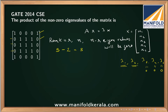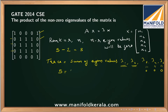Now I need to find λ1 and λ2, the two non-zero eigenvalues. Applying the principle that the trace of the matrix equals the sum of the eigenvalues: the trace is 1+1+1+1+1 = 5. Since three eigenvalues are zero, we get λ1 + λ2 = 5.